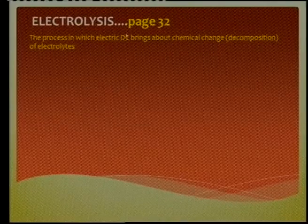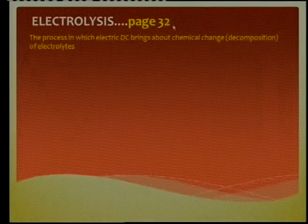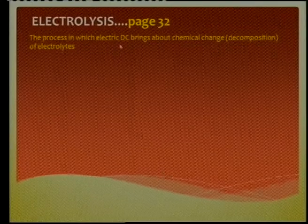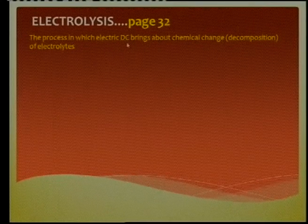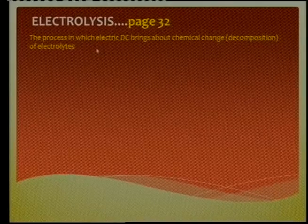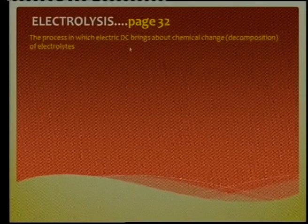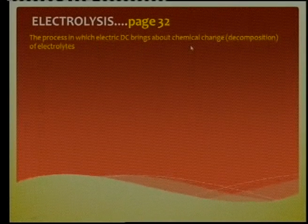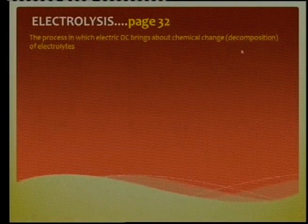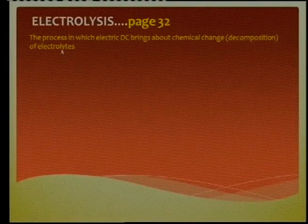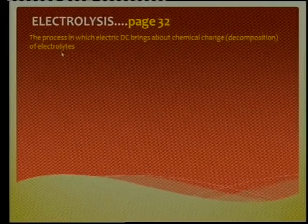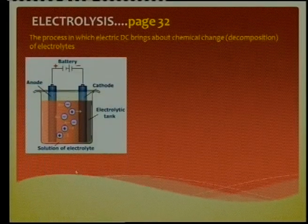We now go to electrolysis, which is on page 32, and there's a definition on that same page. DC stands for direct current. So we use electricity — direct current — and we change the chemicals. We break a chemical up; that chemical, called the electrolyte, we break it up. Here's an example of such a cell.